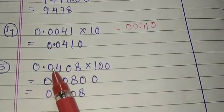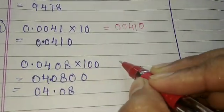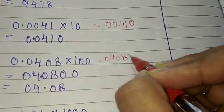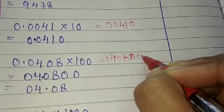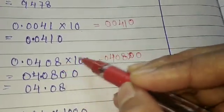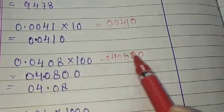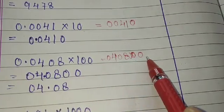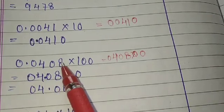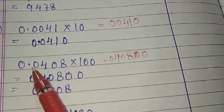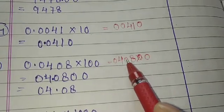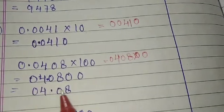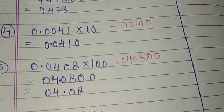Now 0.0408 into 100. Forget the point; 100 has two zeros, so add two zeros. Count how many decimal digits: 1, 2, 3, 4 — four digits. Place the point 4 digits from the right. My answer will be 4.08. The leading zero is meaningless so we can remove it.